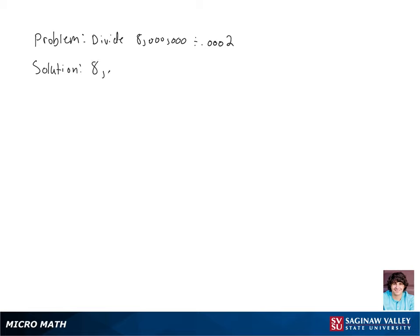Let's divide 8 million by .0002. The first thing we'll want to do here is rewrite both of these numbers in scientific notation.